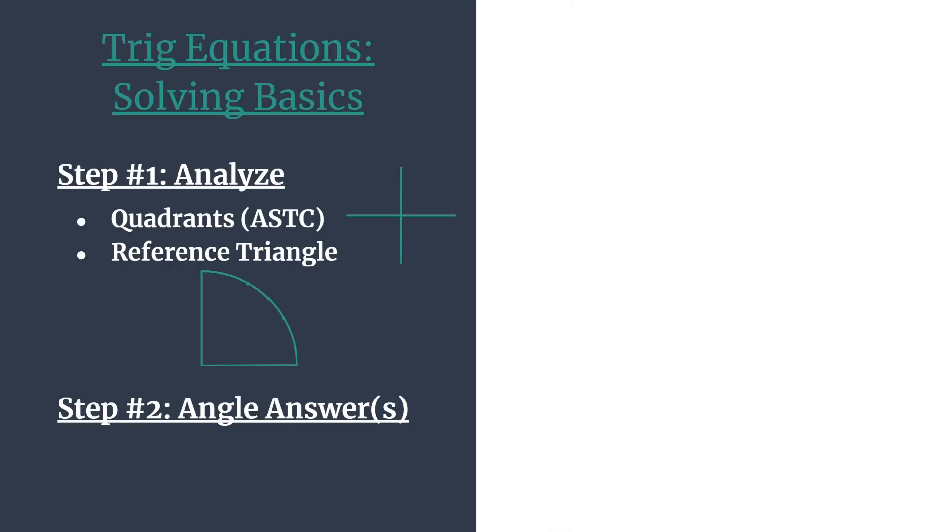Okay, so here's our outline. We start first by analyzing our equation. So we'll want to find which quadrants we're working in, and we'll do that using the acronym ASTC. More on that later.